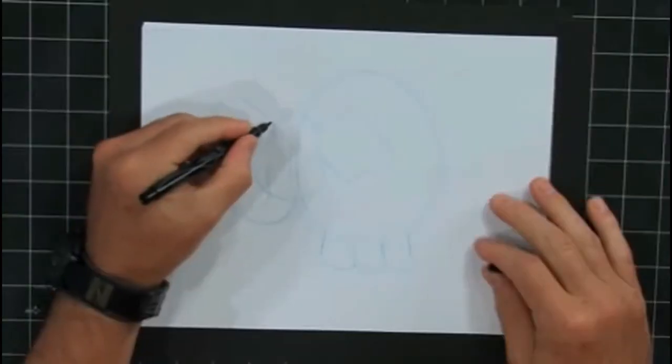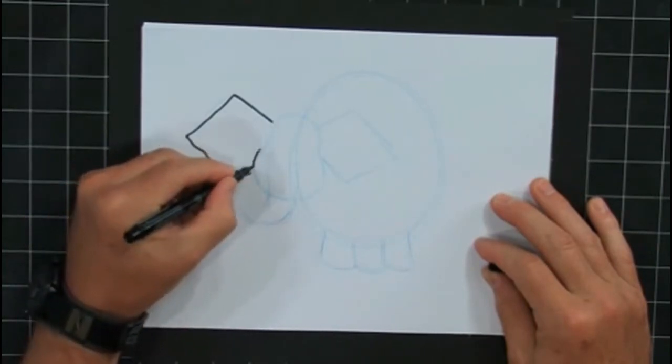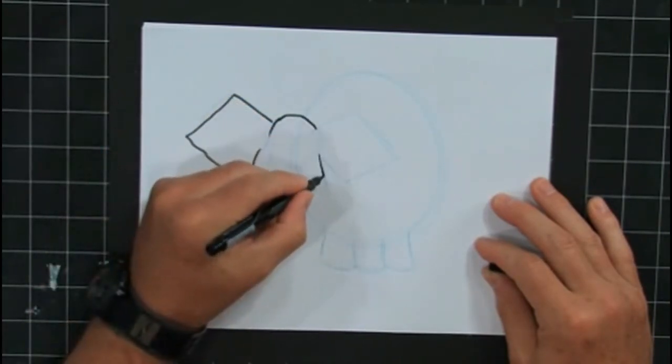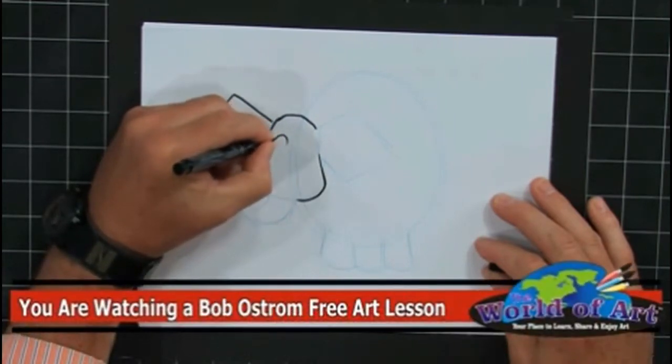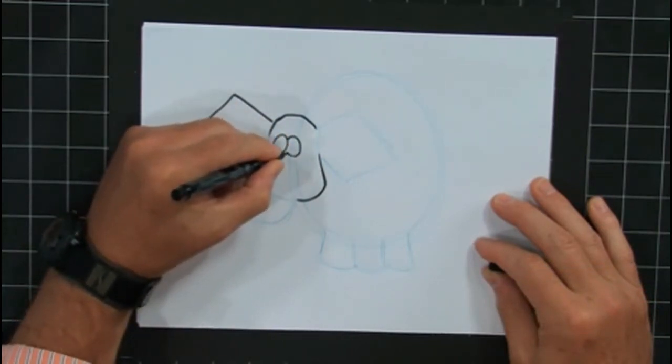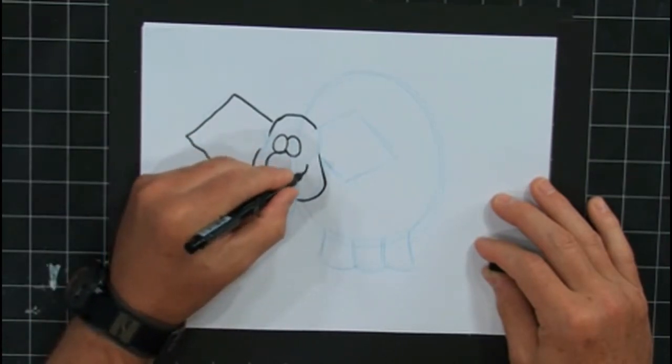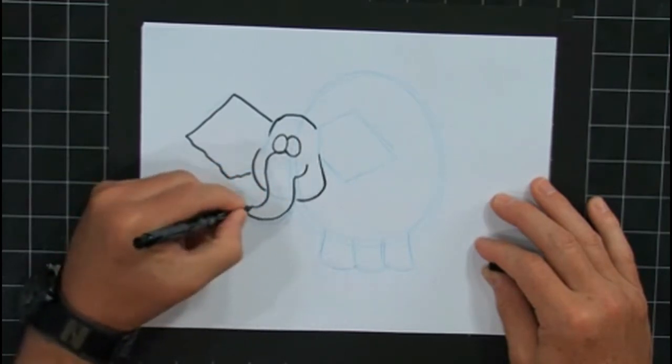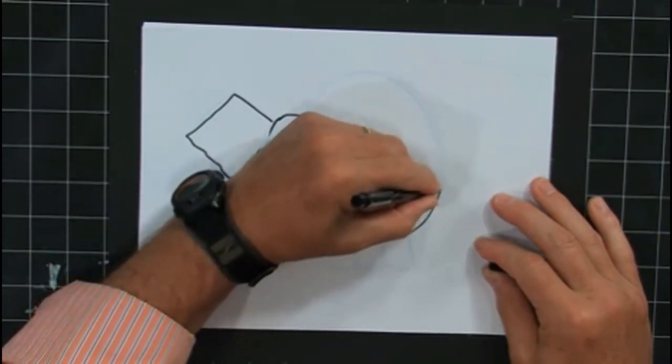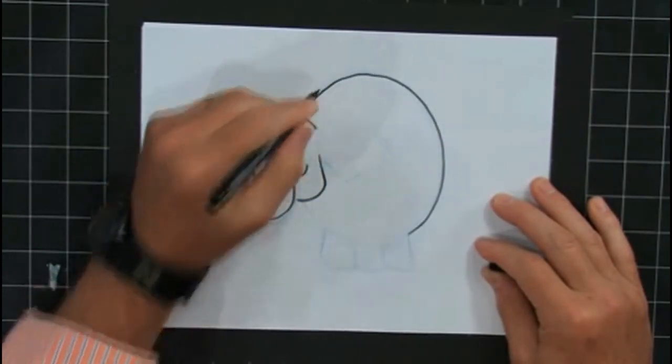So let's grab our pen. Go ahead and ink this guy in. There's his ear. Here's his head. Here's his eyeballs. We'll put the trunk on here like this. And here's his body shape right here like a big egg.